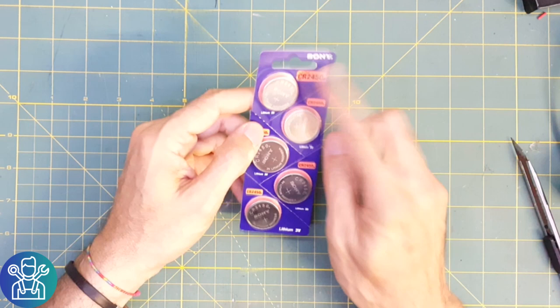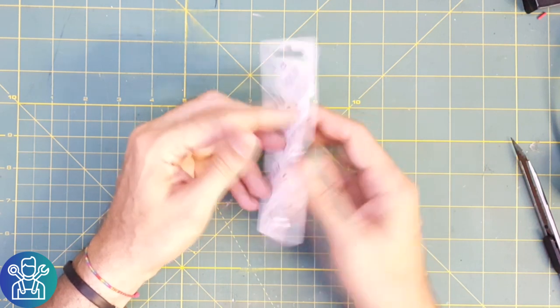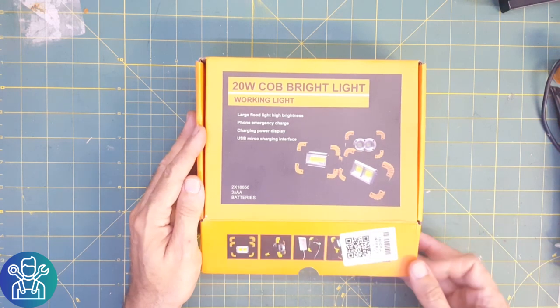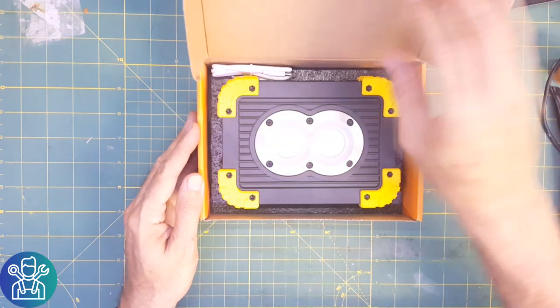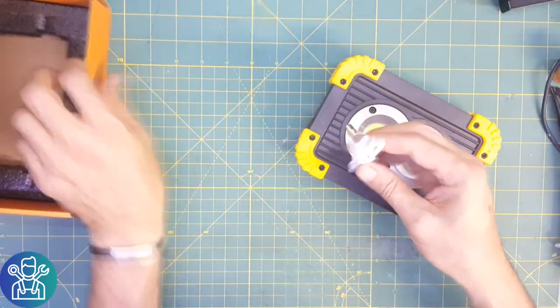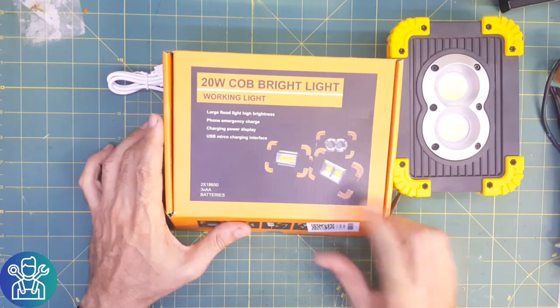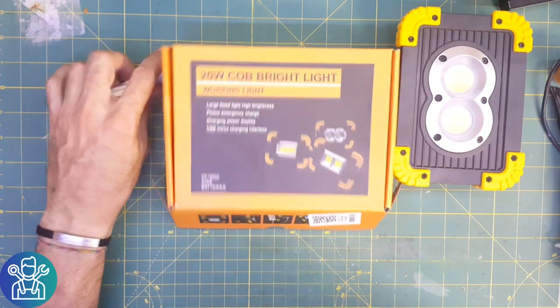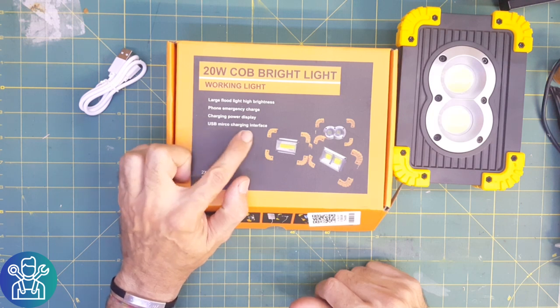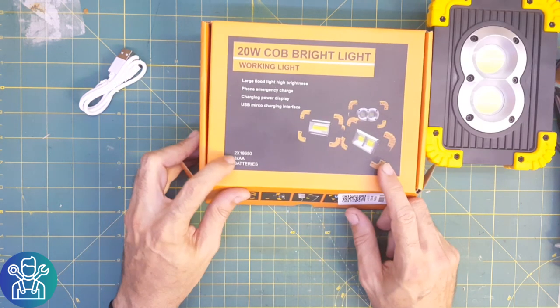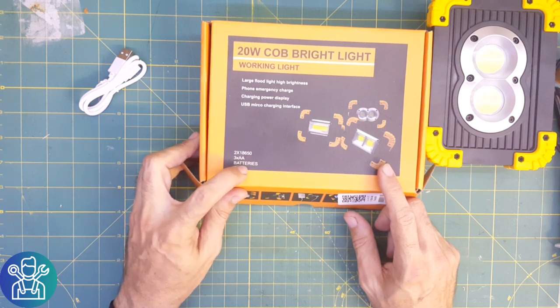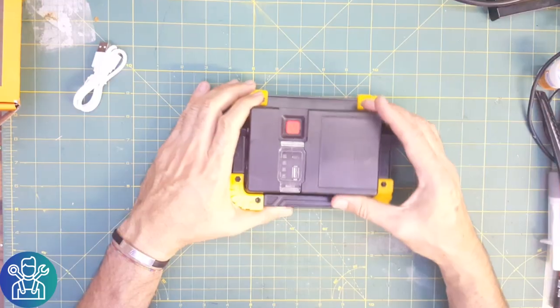This is a 20 watt COB bright light. I already opened the box. It comes with a USB cable. This light has a large floodlight, phone emergency charging, charging power display, and USB micro charging interface.